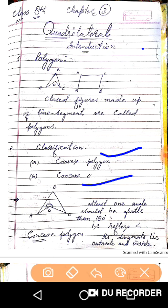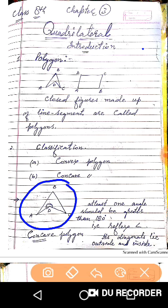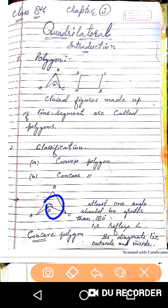To understand the Concave Polygon first, I have drawn here a figure. When you observe it, you find this figure is also made up of line segments. But the difference is this: its one angle, angle D, is greater than 180 degrees. This angle is a reflex angle. So in a Polygon, when at least one angle is a reflex angle — that is, greater than 180 degrees — it is called a Concave Polygon.